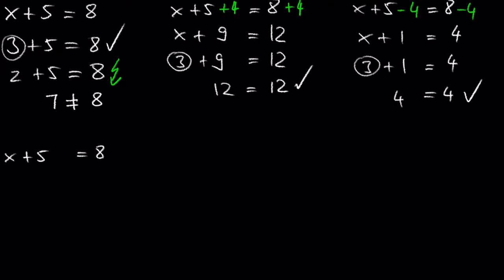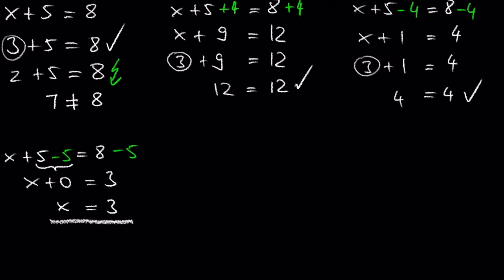This property, which is called the addition property, is used in solving equations. Adding negative 5 to each side of the equation removes the 5 from one side, because adding a negative to a positive is the exact same as subtracting that number. So x plus 0 equals x, and x is equal to 3.